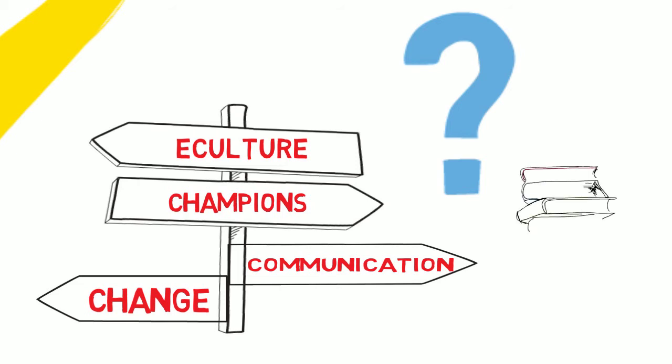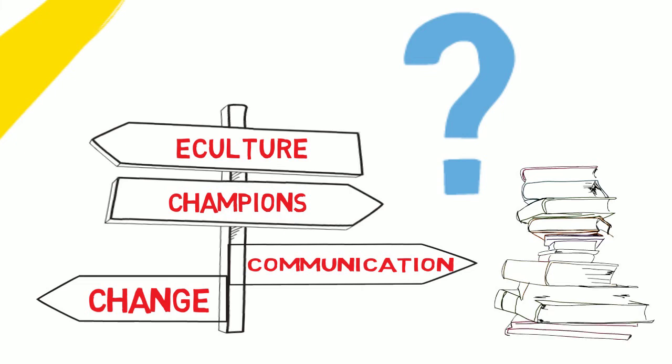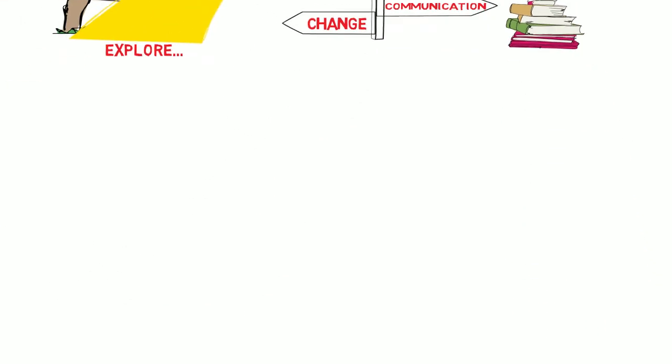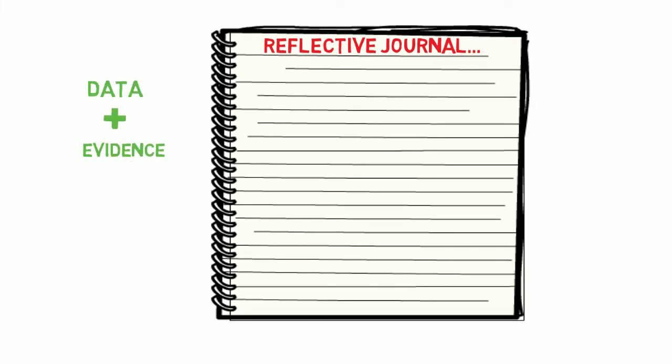Explore the literature and policies that shed light on your research area and what it is that you want to highlight in this area. At all stages of the research process, you will be documenting your thoughts, ideas, experiences, and insights in your reflective journals. Your reflective journal is an important source of data and evidence for your study.